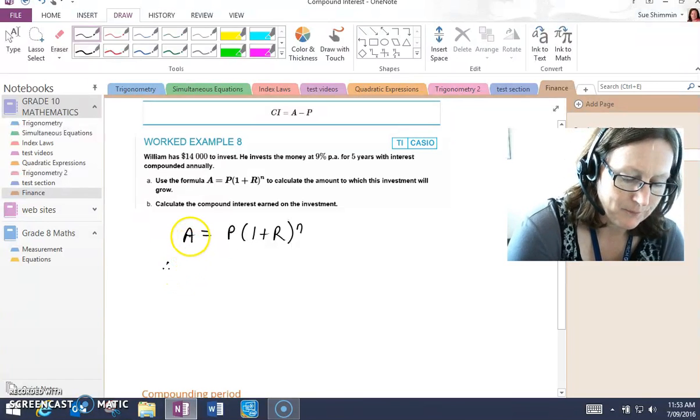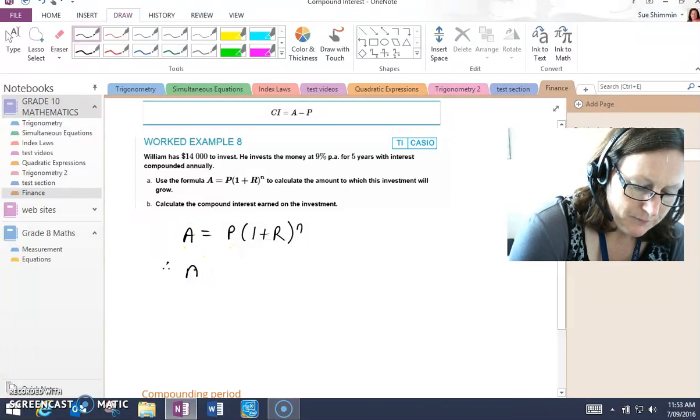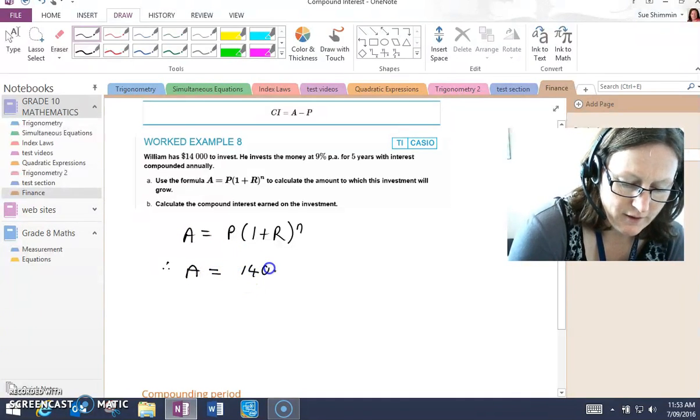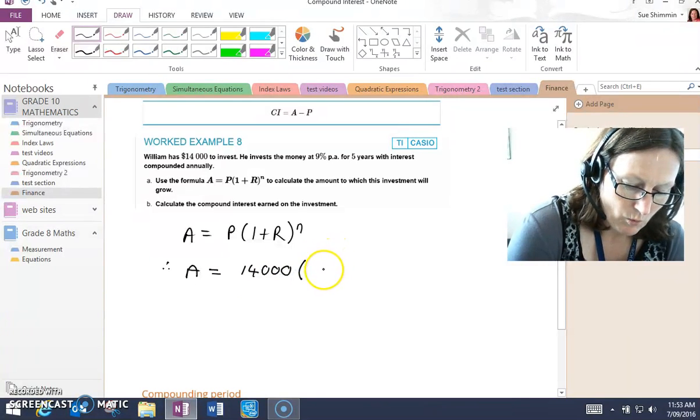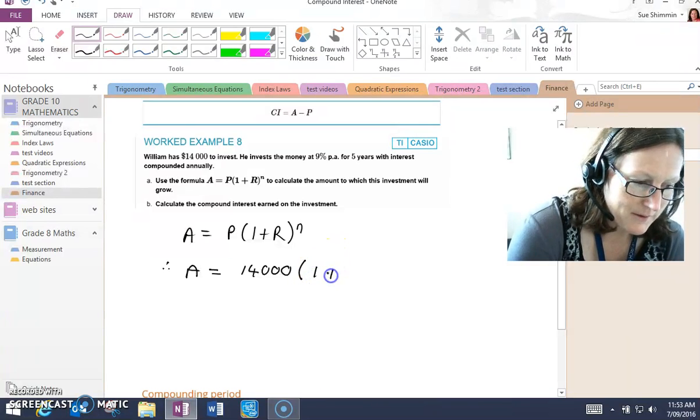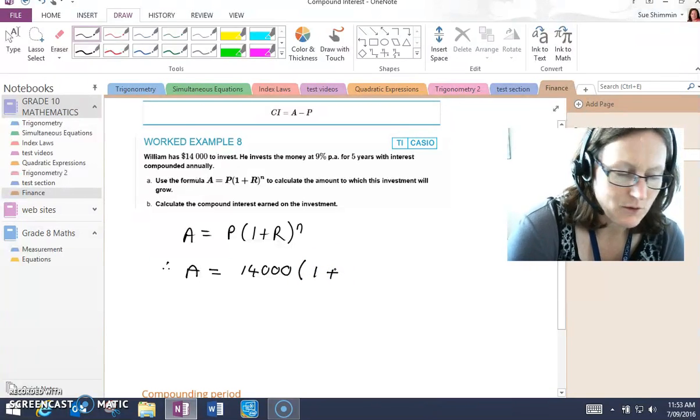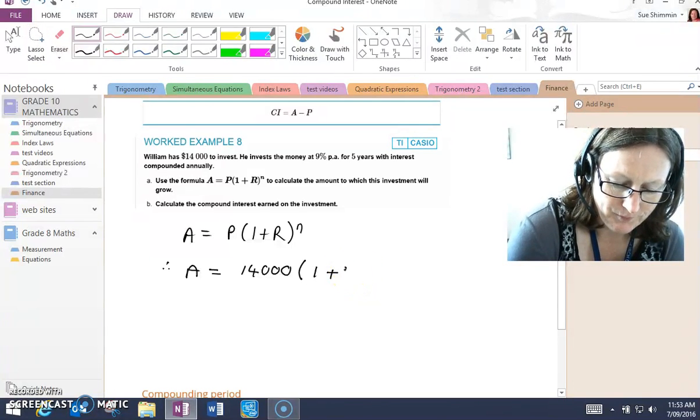We're trying to work out A. We know that P is 14,000. And then we have 1 plus R, which is 9%. So we need to express that as a decimal, 0.09.